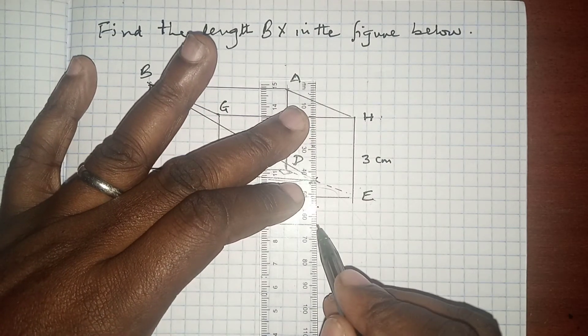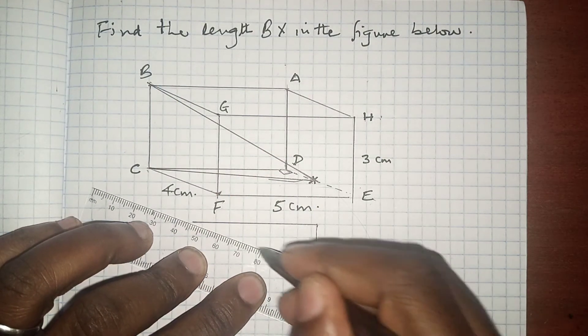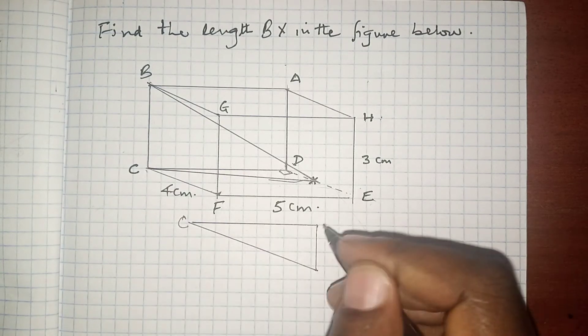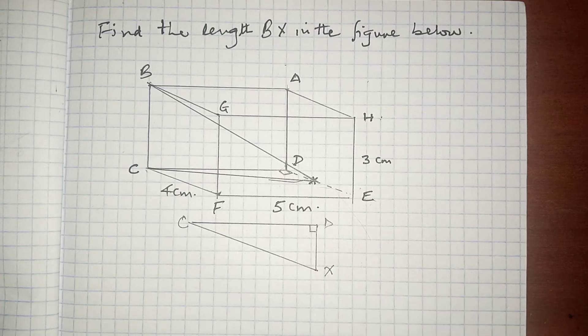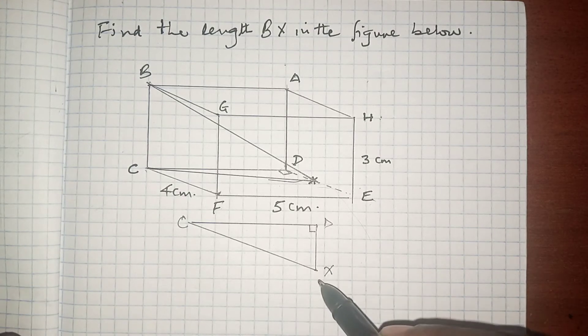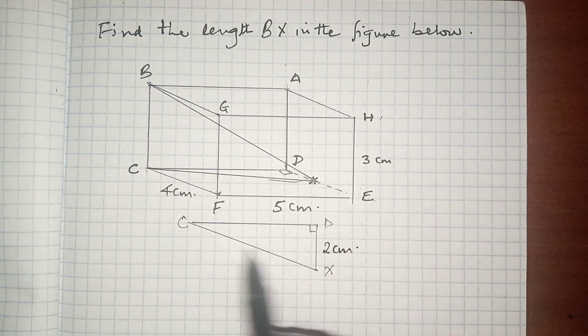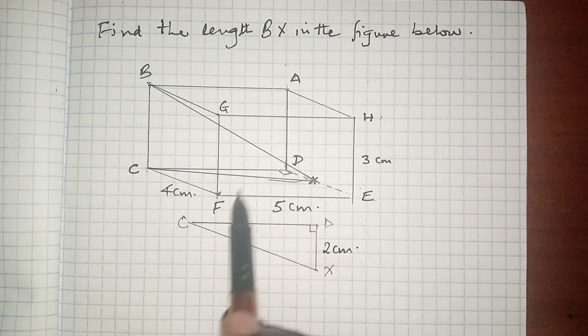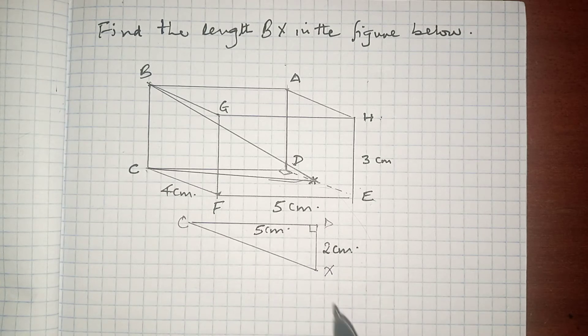Let's have it here. This is C, this is D, this is 90 degrees, and this is X. DX, as we said, is half of 4, which is 2 cm. And CD is the same as FE, which is 5 cm. Therefore, we need to calculate CX.